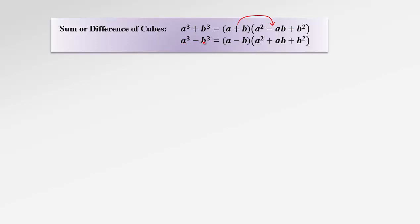The difference of cubes works nearly the same way, except the short bracket contains the minus sign. In the long bracket, take the square of the first term, switch the sign, multiply the two terms AB, and finally add the perfect square of the last term. The second bracket in cubic formulas is not factorable — don't confuse it with the perfect square formula. Another way to remember the signs: in each formula there is only one minus, either in the first bracket or in the middle term of the second bracket.